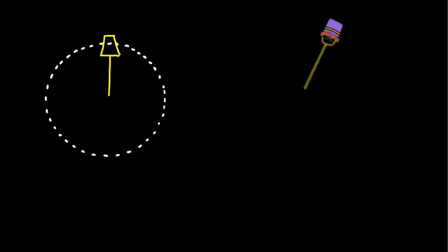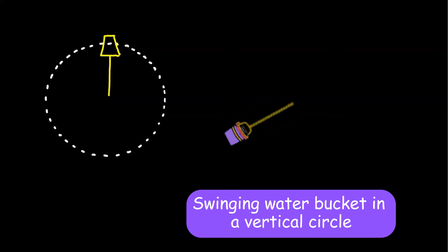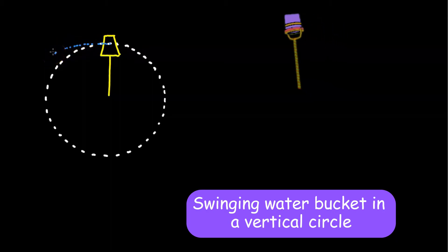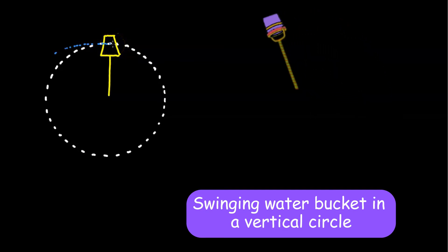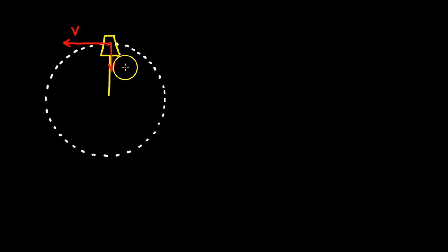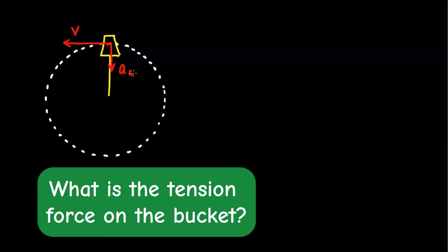Now let's look at a bucket filled with water being swung vertically. If swung fast enough, the water stays in the bucket because Newton's first law says objects in motion tend to stay in motion — the water wants to go in a straight line, and the bucket catches it. At the top of the swing, the velocity is tangent to the circle (pointing left), and the acceleration points toward the center of the circle.